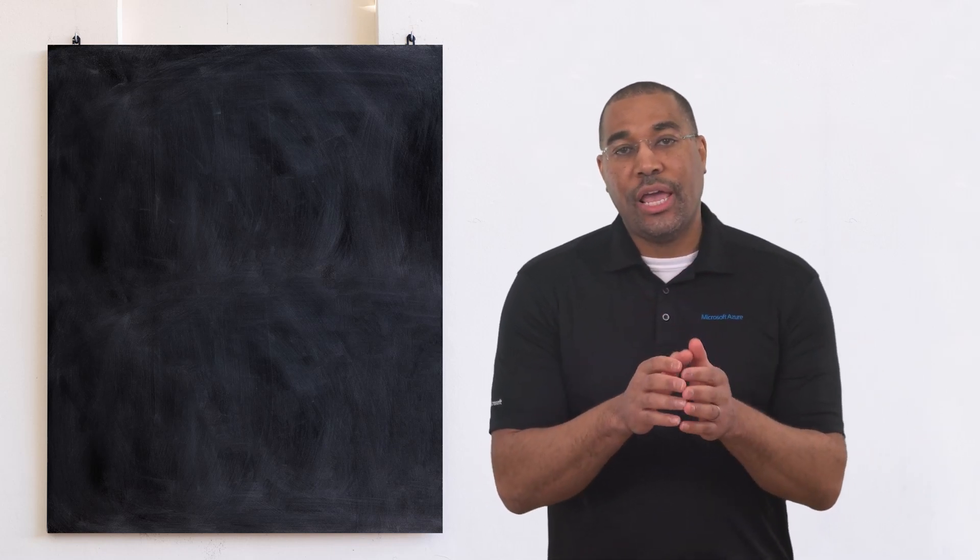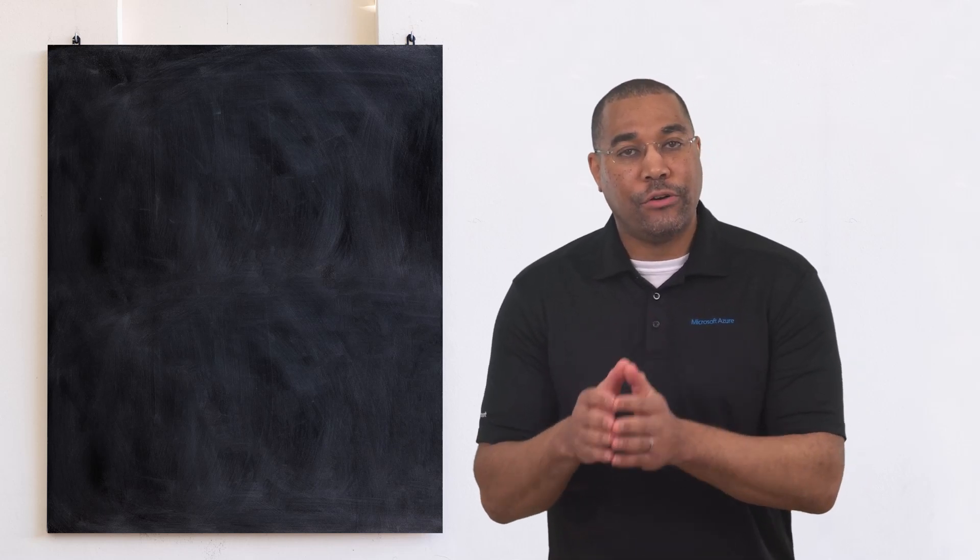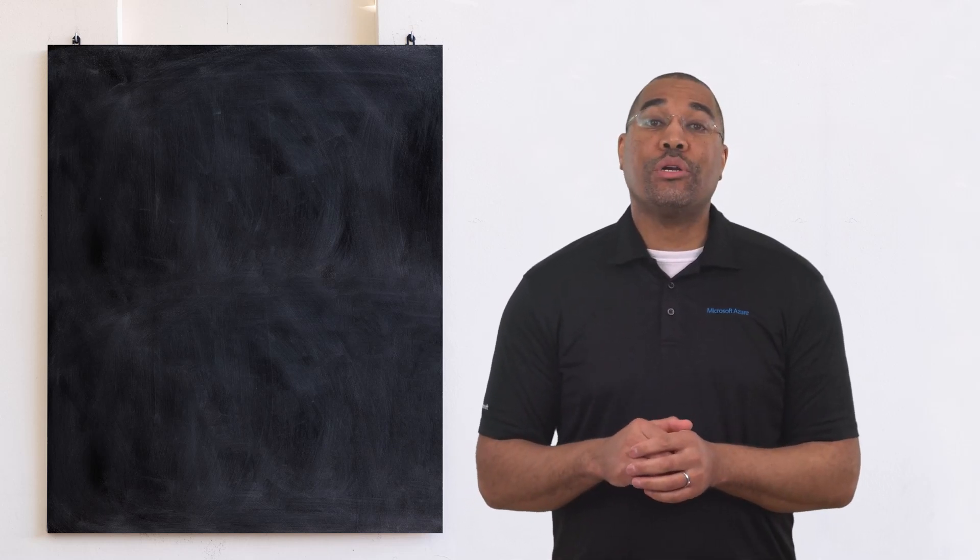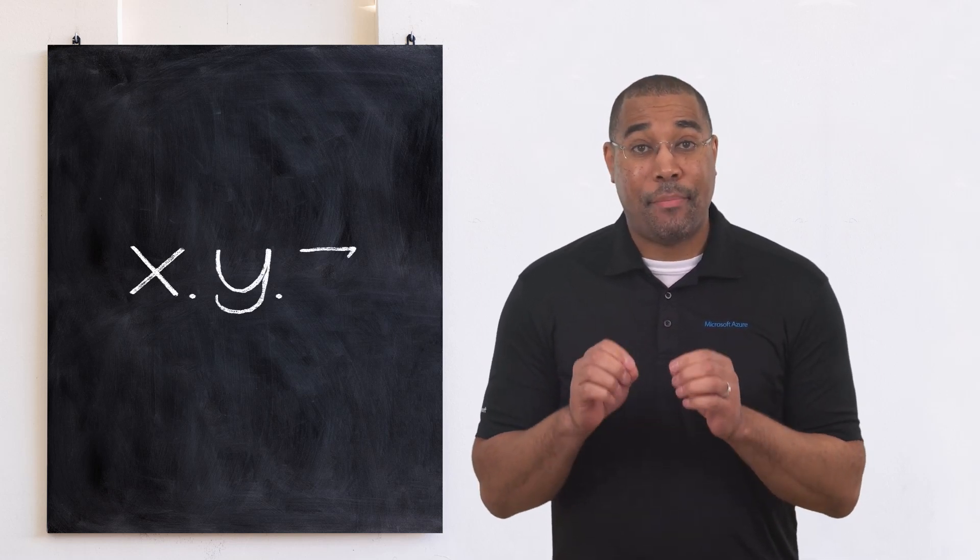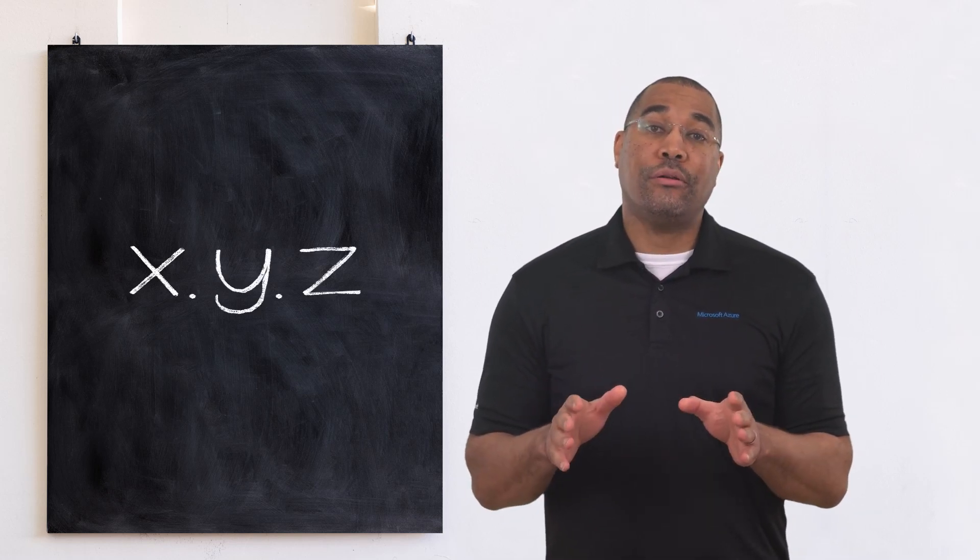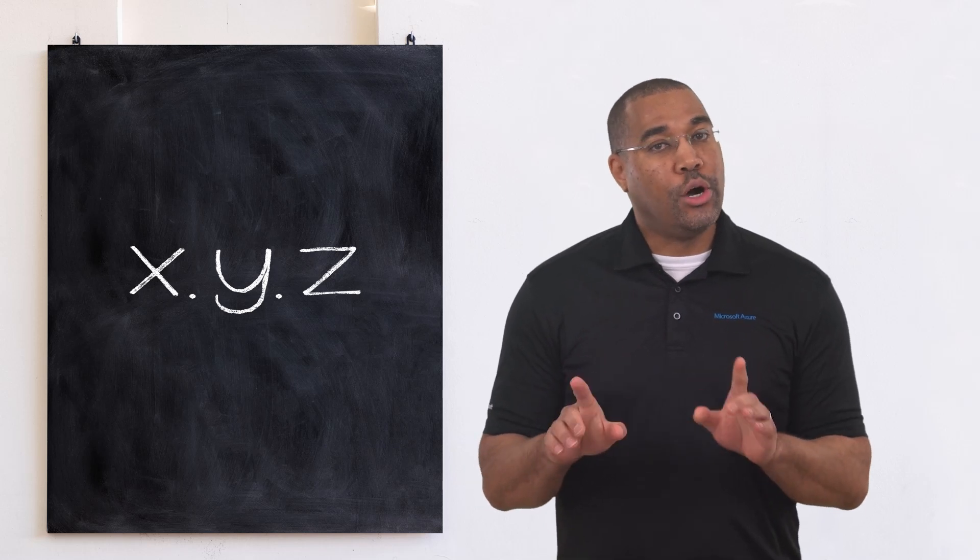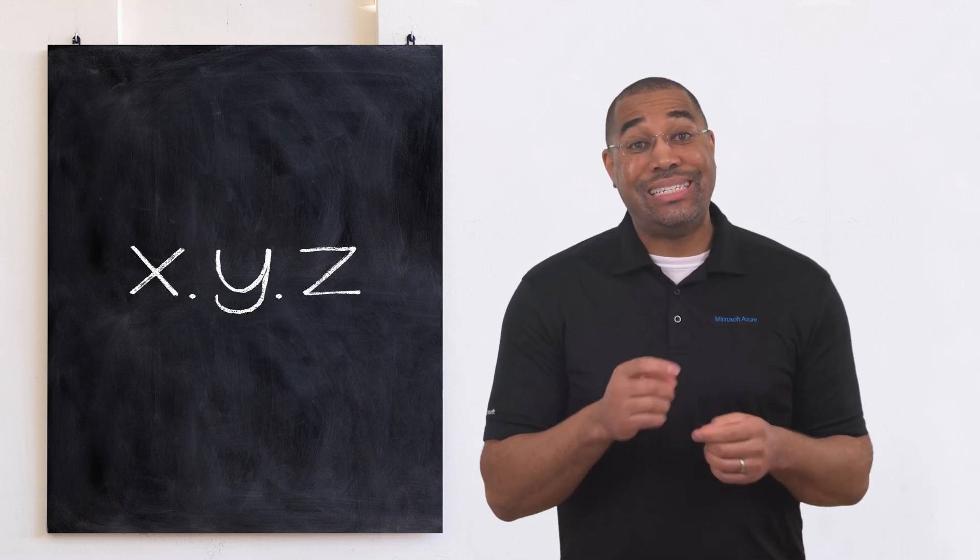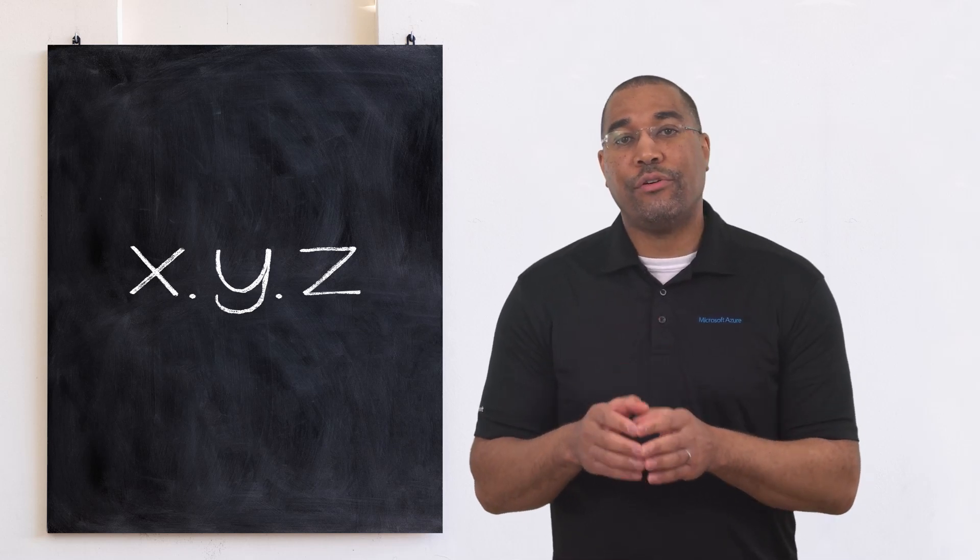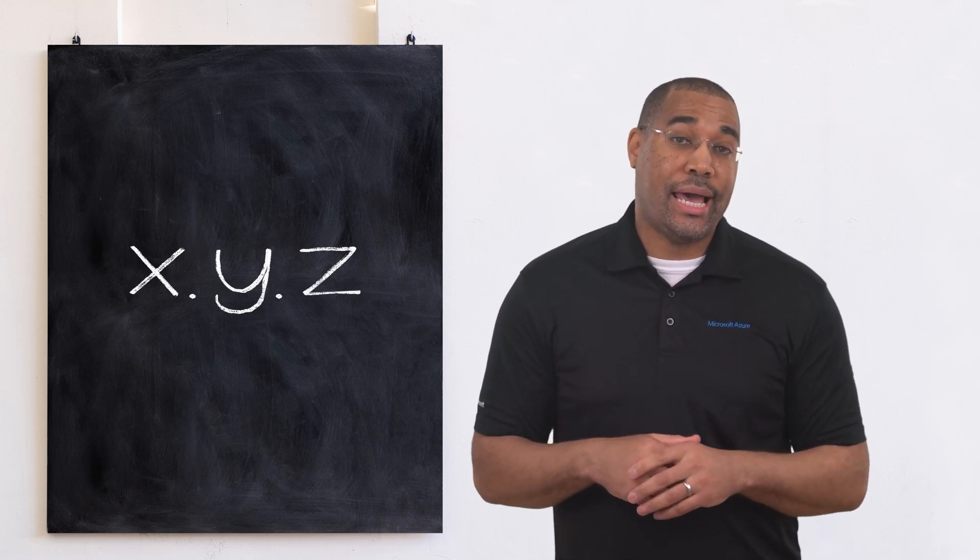Semantic versioning has a defined structure and rules that dictate how the version changes. The structure requires a major version, followed by a minor version, and lastly, a patch version. Each part is a non-negative integer with no leading zeros. The type of changes since the last version dictate which portion of the version you increment or reset.